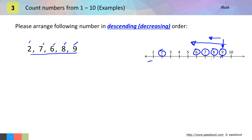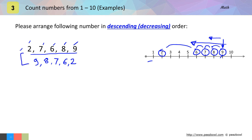First we have nine, and after this we move to the left to the next highlighted number — that means we have eight, then we have seven, then six, and after that two. So we have arranged this series in descending order.